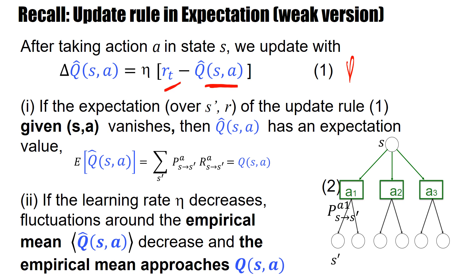And then I had this statement. If the expectation over the next states S' and R of the update rule 1, if this expectation given s,a vanishes then my estimate Q hat as a has an expectation value which is given by this formula here.